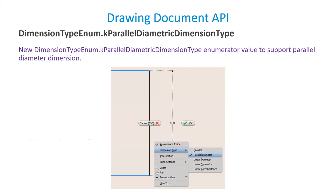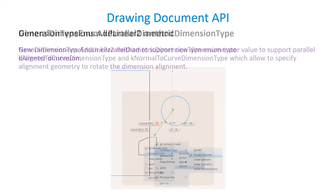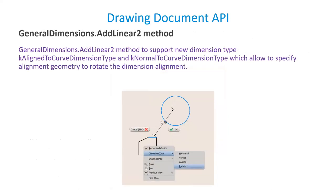A new dimension type enum is added which allows specifying a diametrical dimension in a parallel view, supporting parallel diameter dimensions. One more Add Linear method is introduced to support new dimension types like Align To Curve and Normal To Curve dimension types, which allow specifying alignment geometry to rotate the dimension alignment.